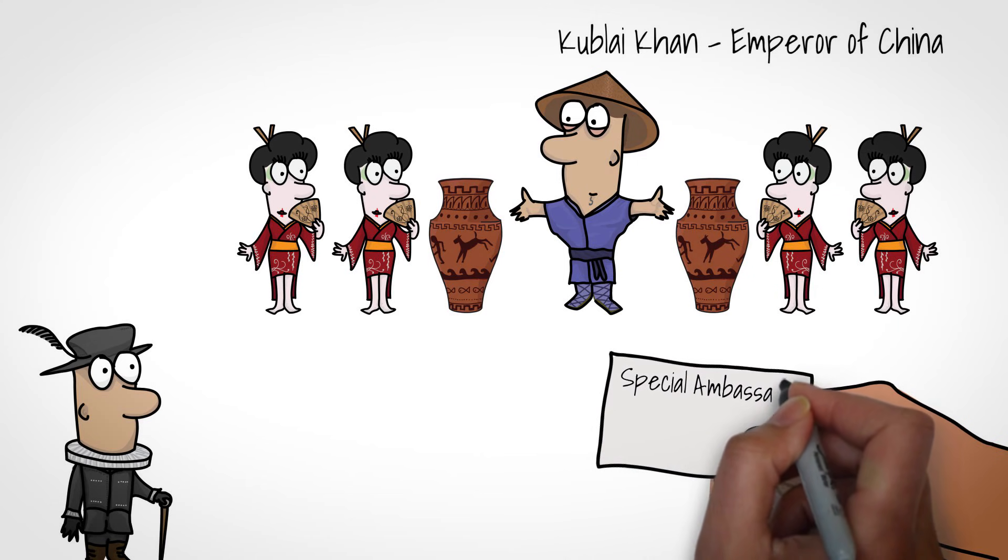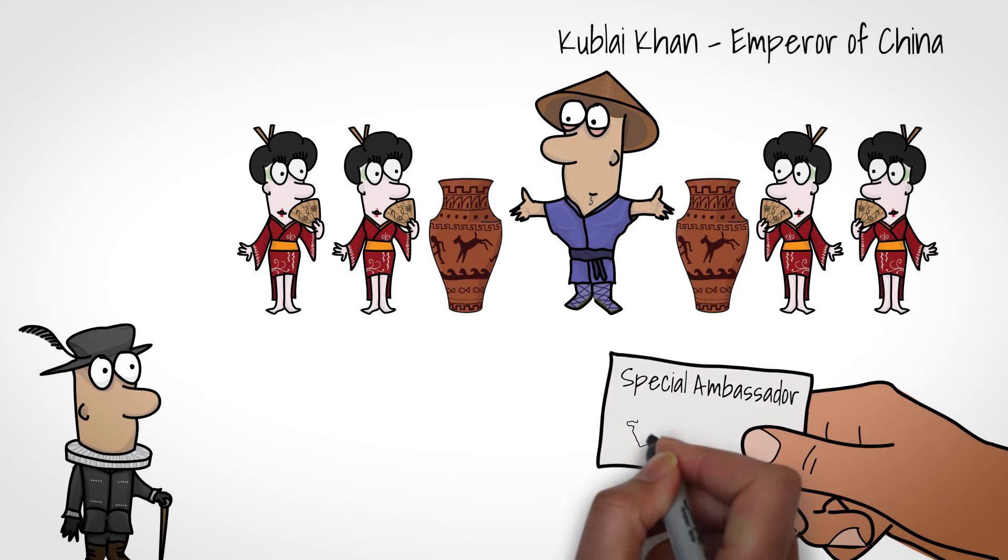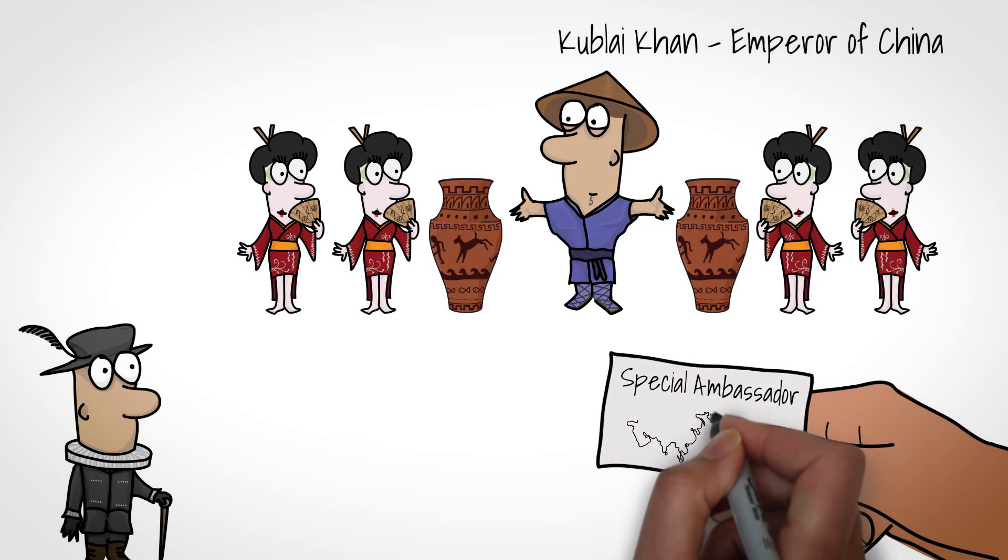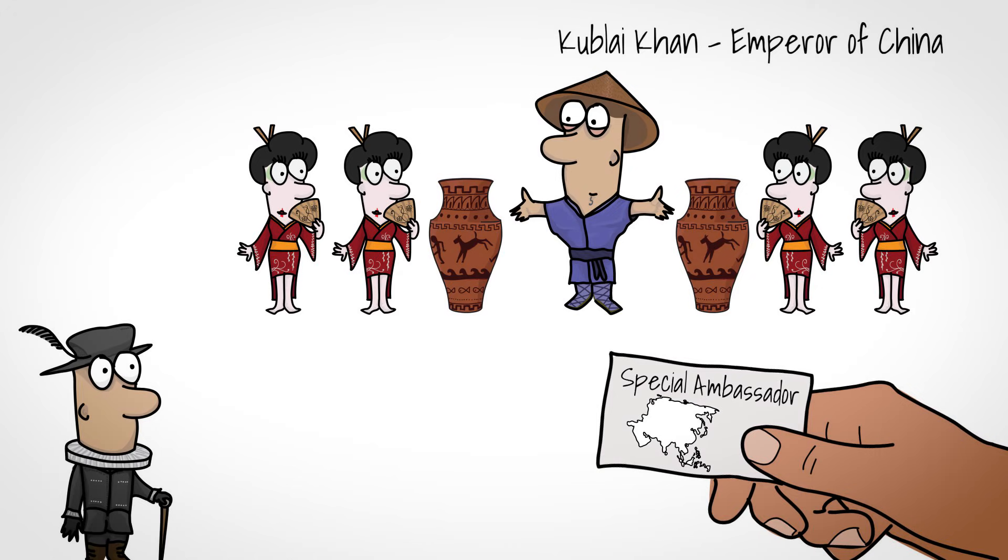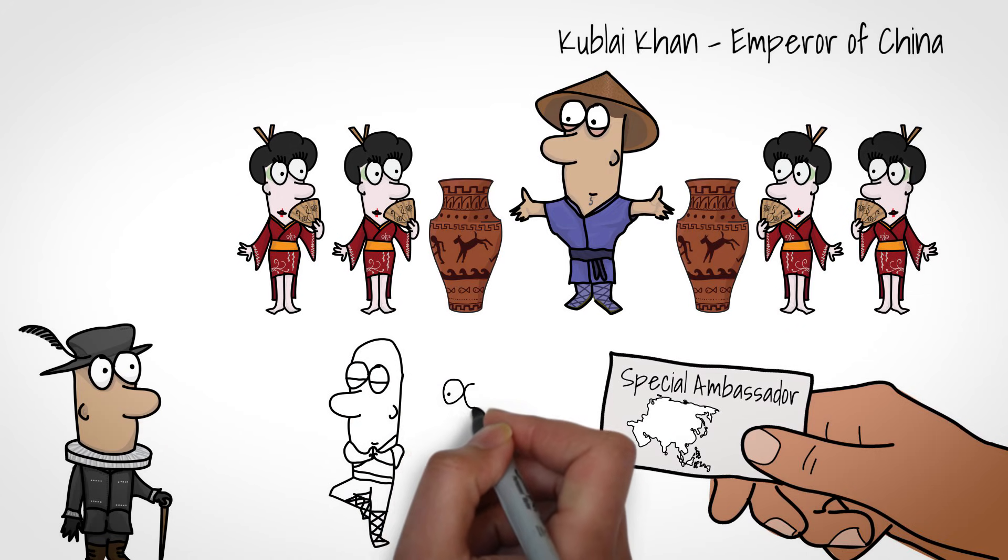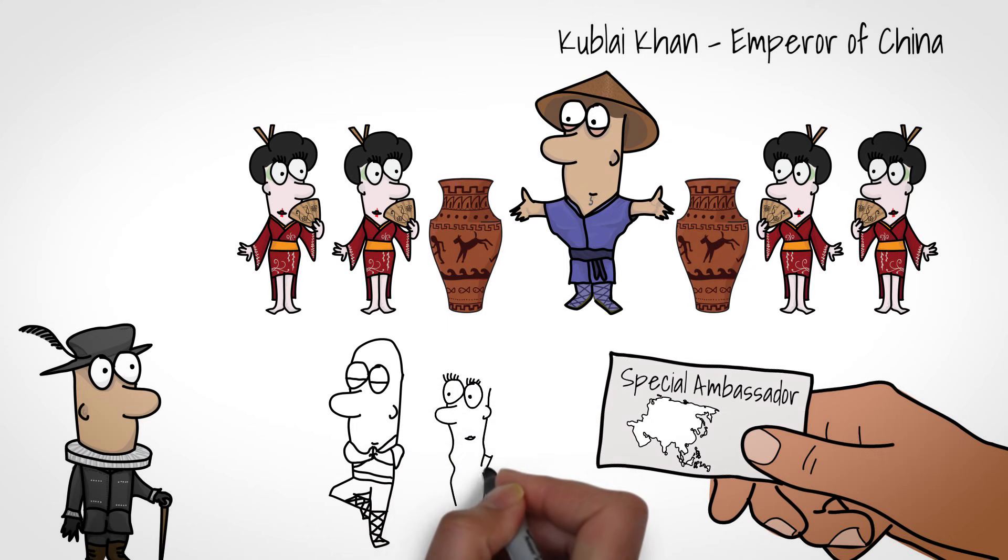For 17 years, Marco Polo served as an ambassador for Kublai Khan, travelling far and wide in his empire and reporting back on commercially valuable information which would make Khan richer. His job as ambassador took him to distant lands including Japan and India. As a result, he became fluent in four different languages and became a valuable asset for the emperor.